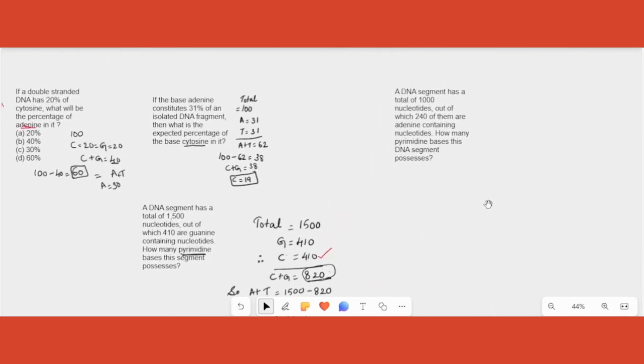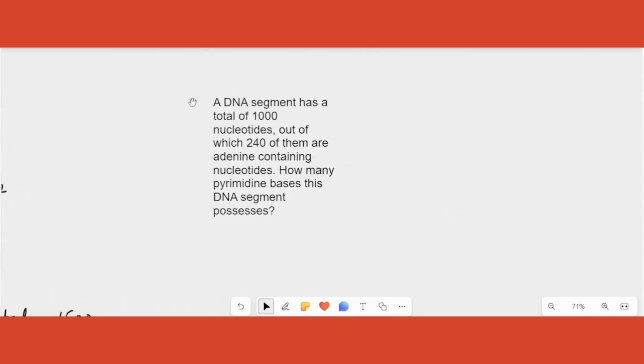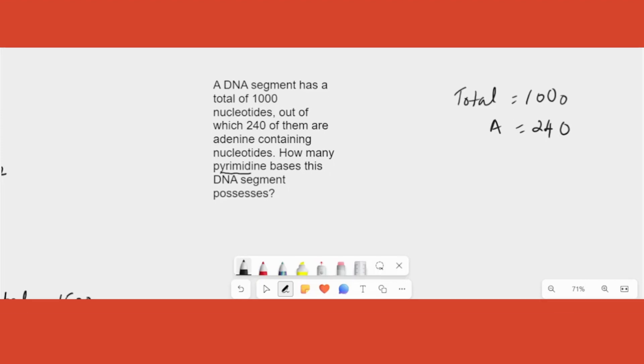Now can you try to answer this by yourself and let me know the answer for the question. They have given 1000 nucleotides are there total. Out of them 240 are adenine. So I will just write the data for you this time. Total is equal to 1000. A is given as 240. How many pyrimidine bases are there? You have to find out and let me know in the comments. Thank you.